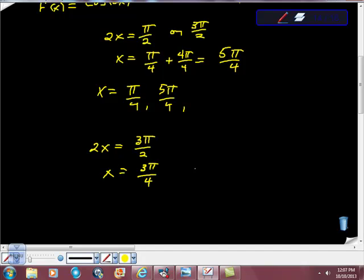3π/4 plus 4π/4, because every time we go π, we do one whole revolution. In this case, because our period is only π, that equals 7π/4. And 7π/4 is less than 2π, right? Because 8π/4 is 2π.